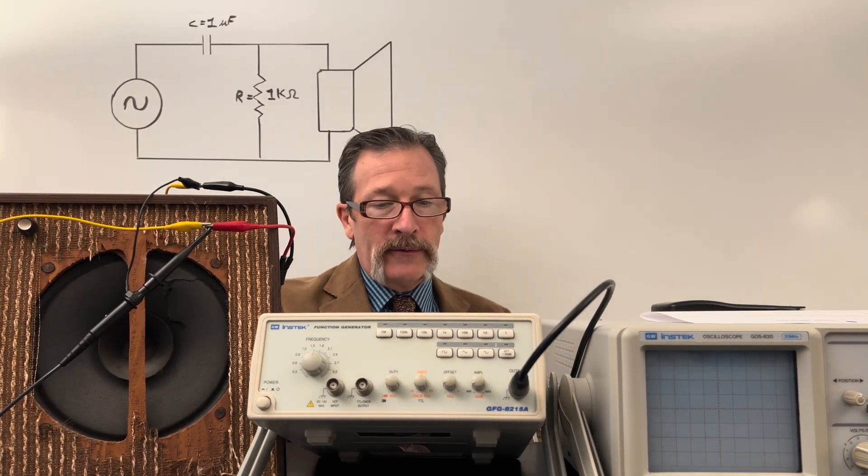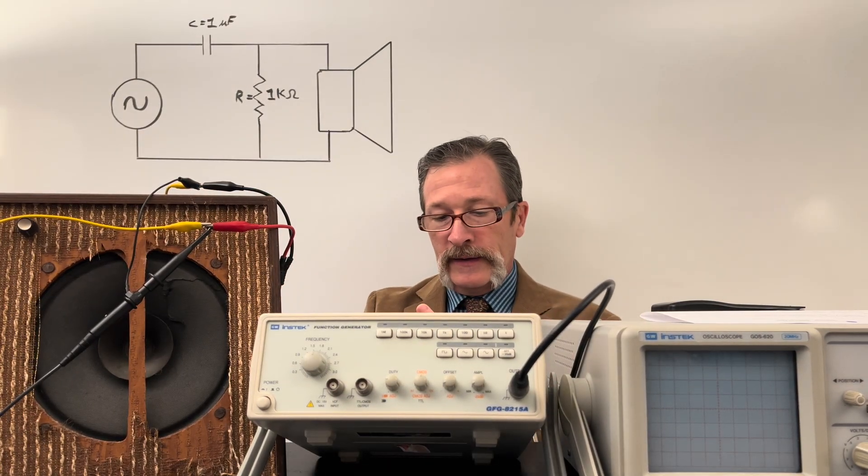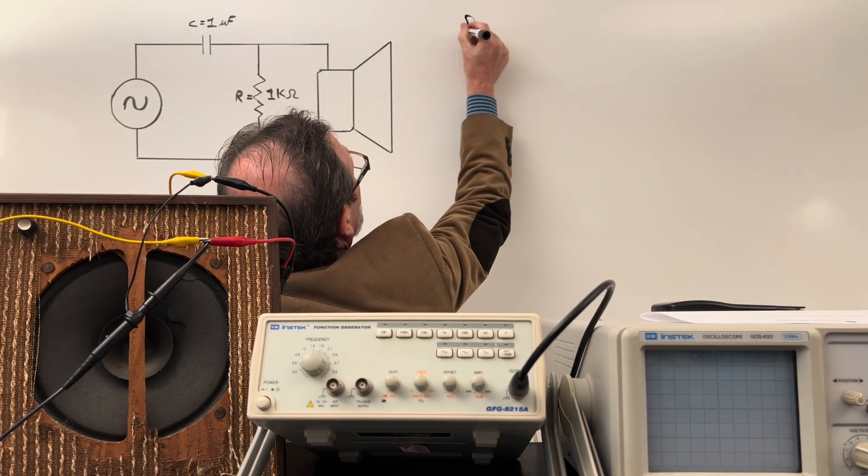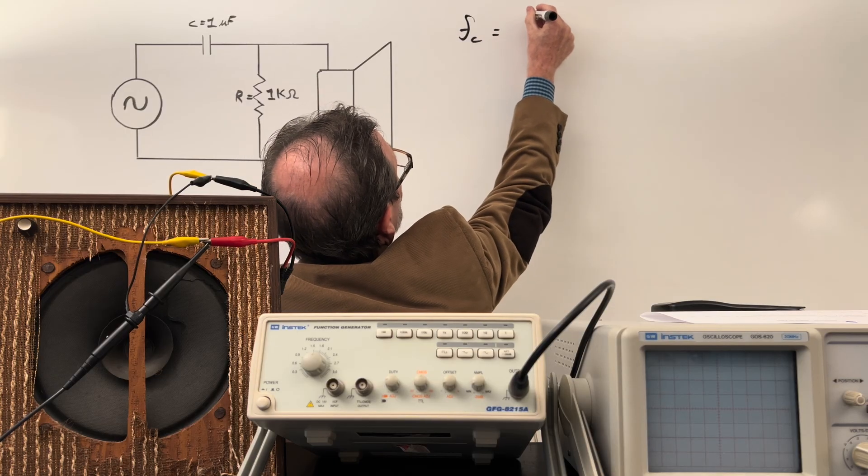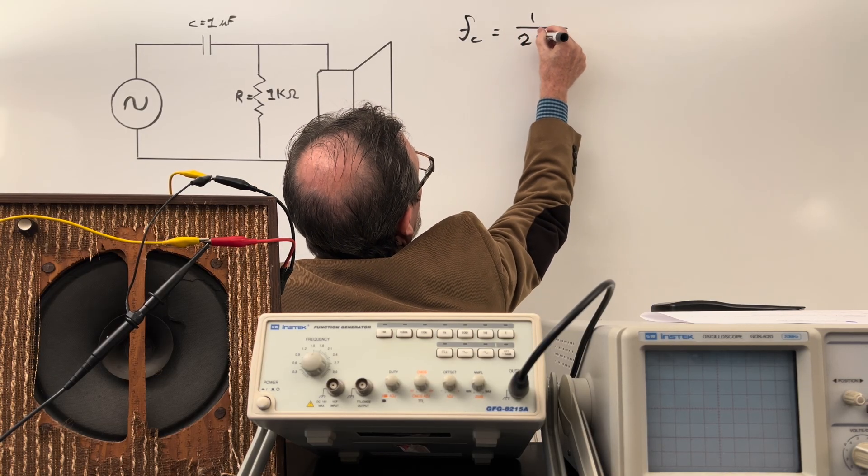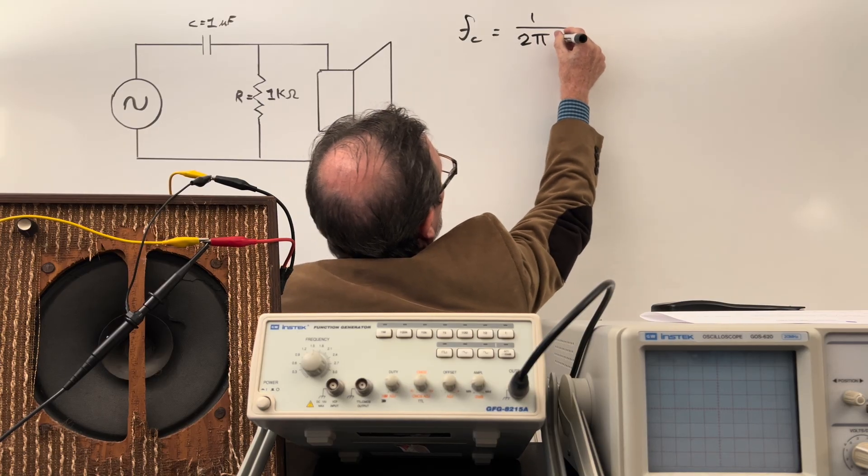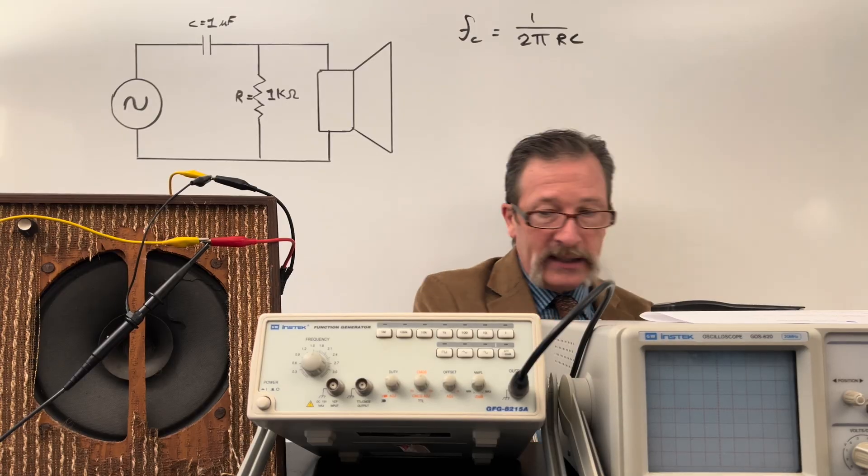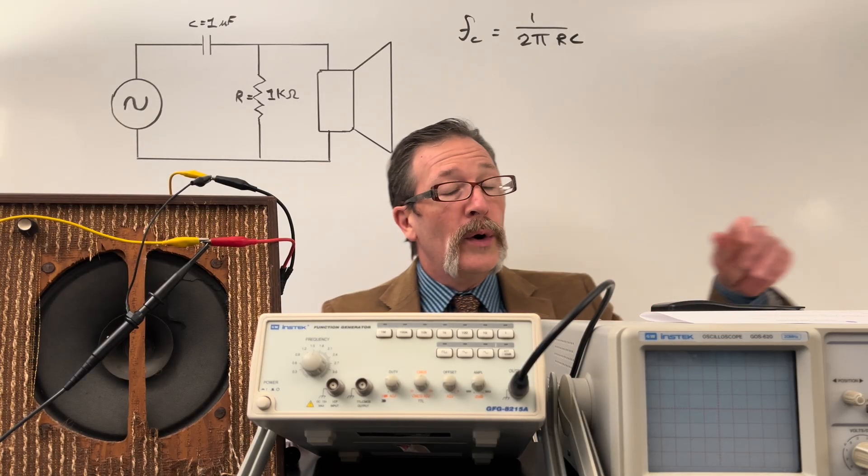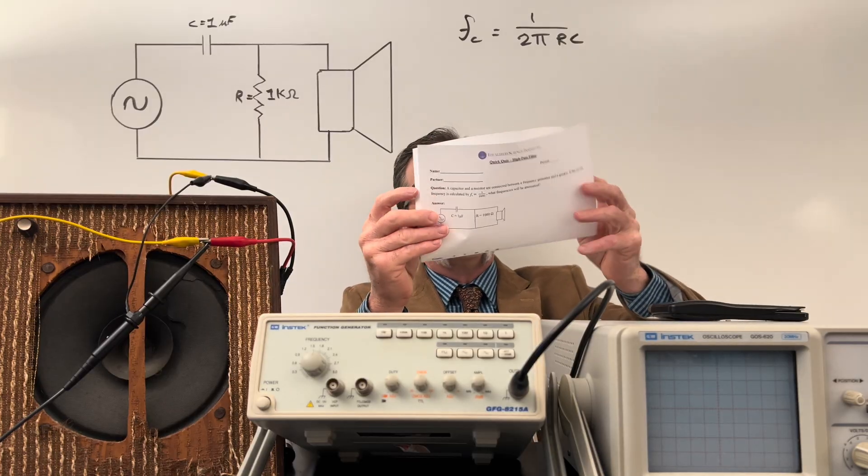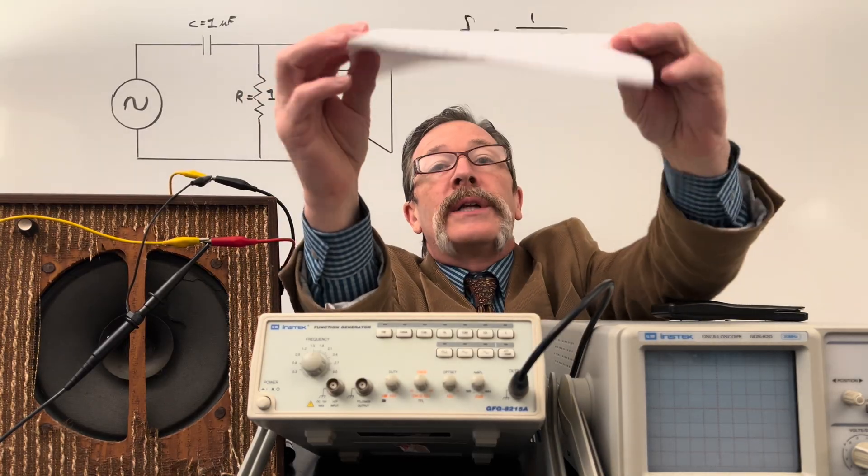The formula for the frequency cutoff is: frequency cutoff equals 1 over 2πRC. Now let's see if you can figure out what frequencies are going to be attenuated. Here's what your quiz looks like for today.